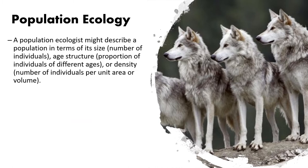A population ecologist describes a population in several ways: the number of individuals, the age structure — how many are young, middle-aged, or old — and the density, which is the number of individuals per unit area or volume. For wolves, for example, density is measured over a massive area because wolves need lots of space. Other organisms don't take up much space at all.